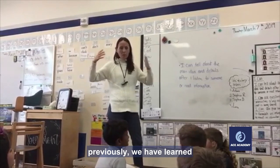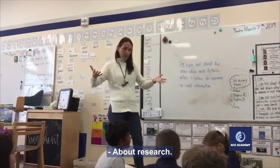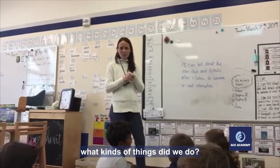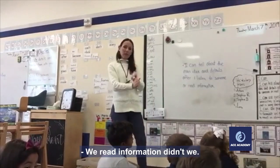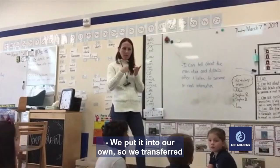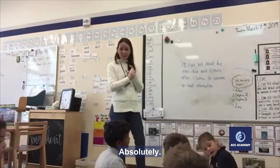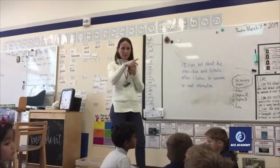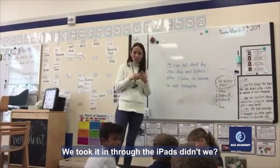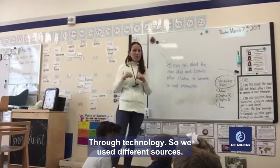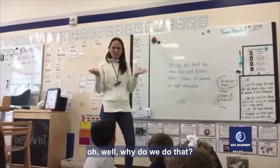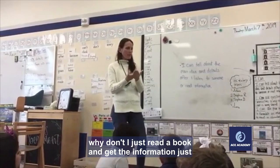Previously we have learned about research — that was the last thing that we did. During the time when we researched, what kinds of things did we do? Corey, we read information, didn't we, and what did we do with that information? We transferred it into our own thoughts. We also took in information not just through books but through iPads and technology, so we used different sources — we had articles, we had books, and we had technology. So why do we do that? Why don't we just read one book and get the information from that?